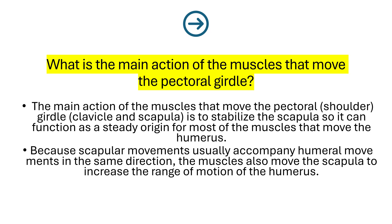The main action of the muscles that move the pectoral girdle shoulder, which is clavicle and scapula, is to stabilize the scapula so it can function as a steady origin for most of the muscles that move the humerus. Because scapular movements usually accompany humeral movements in the same direction, the muscles also move the scapula to increase the range of motion of the humerus.